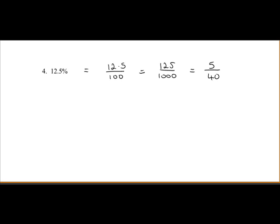We can see we can break it down further. We can divide 5 into both numbers. So 5 into 5 goes once, 5 into 40 goes 8 times. So we get an answer of 1 over 8.